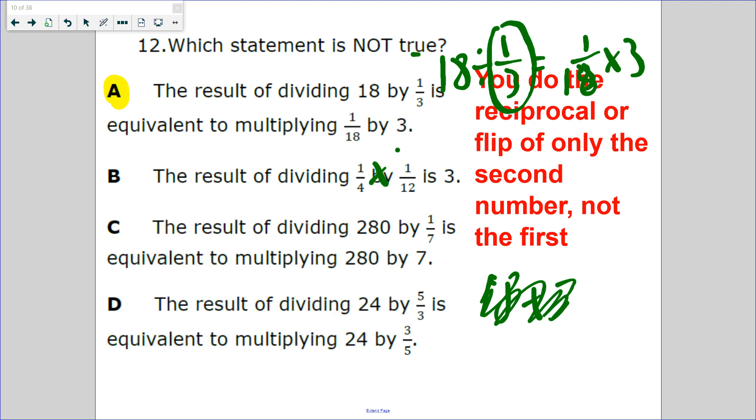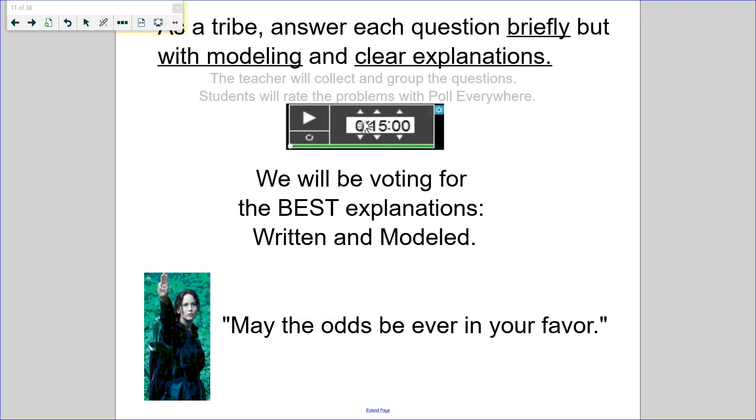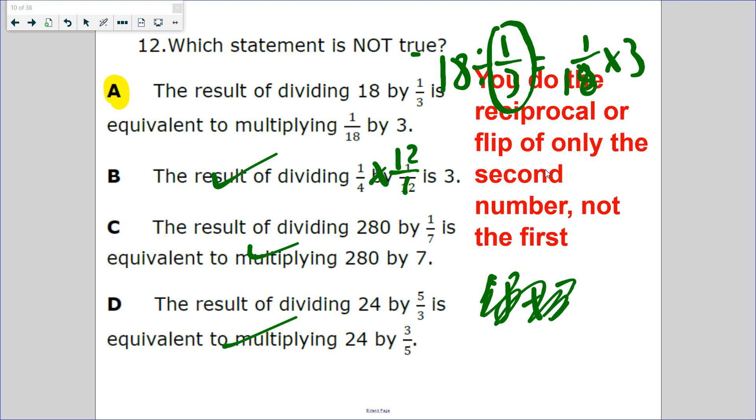The result of dividing 1/4 by 1/12 is 3. You times it by the reciprocal 12/1. 12 divided by 4 is 3. That's true. 280 divided by 1/7 times 7. That's true. The reciprocal of 5/3 is 3/5. That's true.